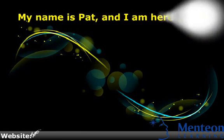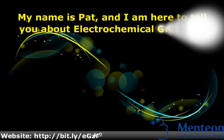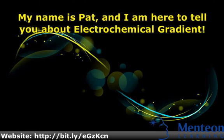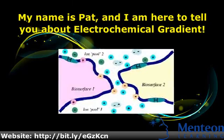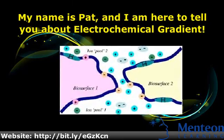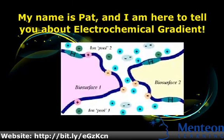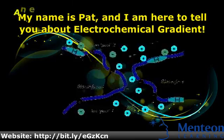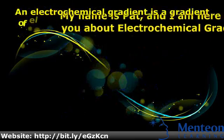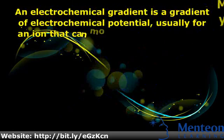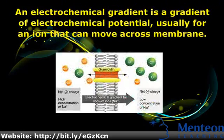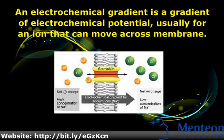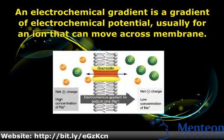Hello. My name is Pat, and I am here to tell you about electrochemical gradient. An electrochemical gradient is a gradient of electrochemical potential, usually for an ion that can move across a membrane.